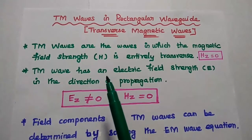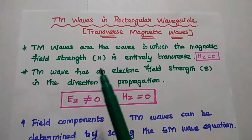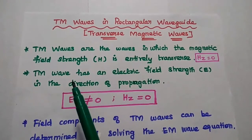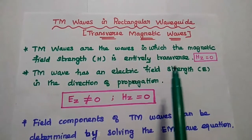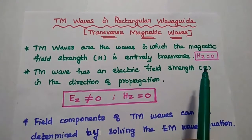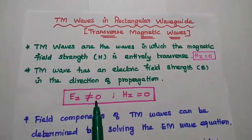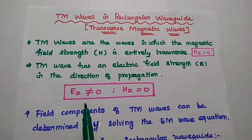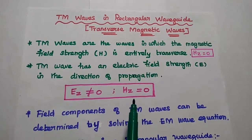We are going to discuss TM waves in rectangular waveguide and derive its field equations. TEM means transverse magnetic. TM waves are the waves in which the magnetic field is entirely transverse along the direction of propagation. Here we consider the direction of propagation as Z, so HZ becomes 0. The TM wave has an electric field strength in the direction of propagation that is not equal to 0. For TM waves, EZ is not equal to 0 but HZ is equal to 0.